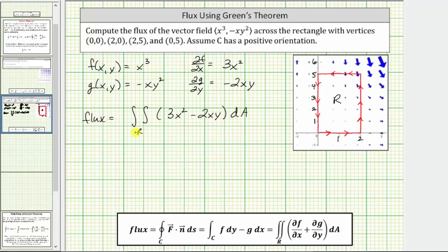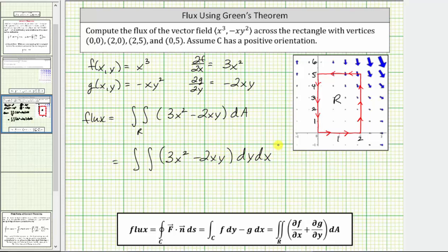The region R is bounded by the rectangle shown here. We will be using rectangular coordinates to determine the double integral, and we can let differential A equal dx dy or dy dx. Let's use dy dx as the order of integration. The limits of integration for Y will be from zero to five, and the limits of integration for X are from zero to two.